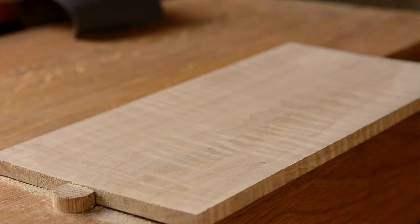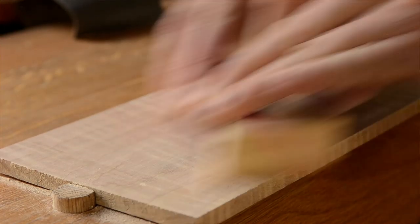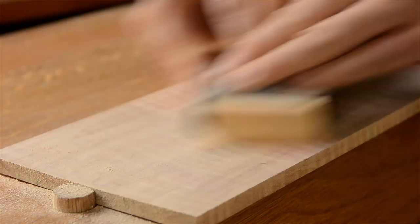First I start with a sample board cut from the same figured maple board that I'm using to build a piece of furniture. Then I'll sand it up through the grits and stop at 220 grit.